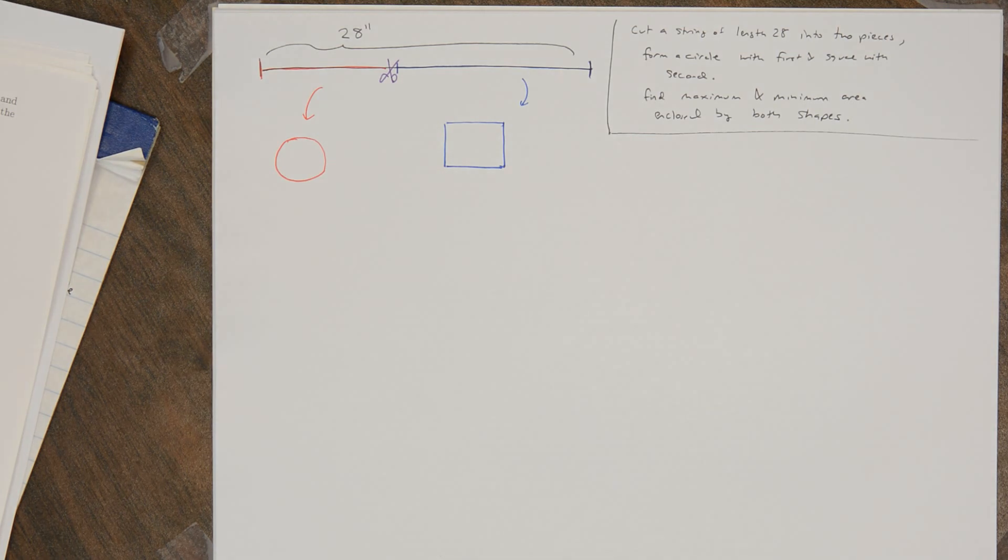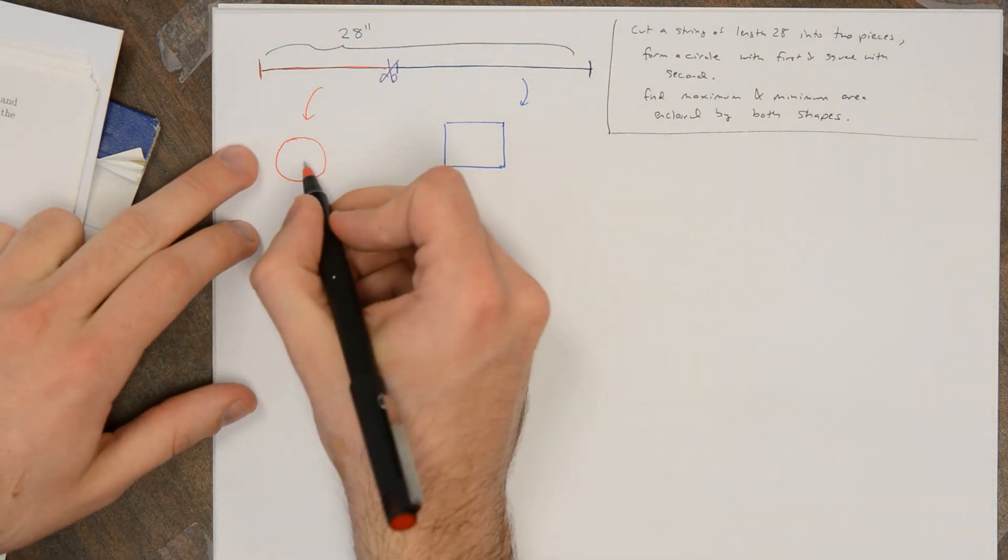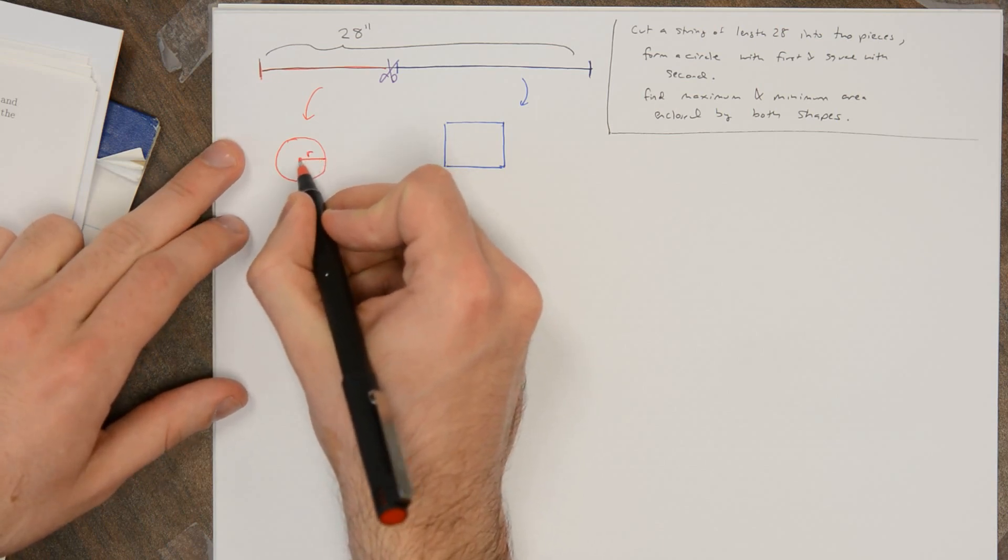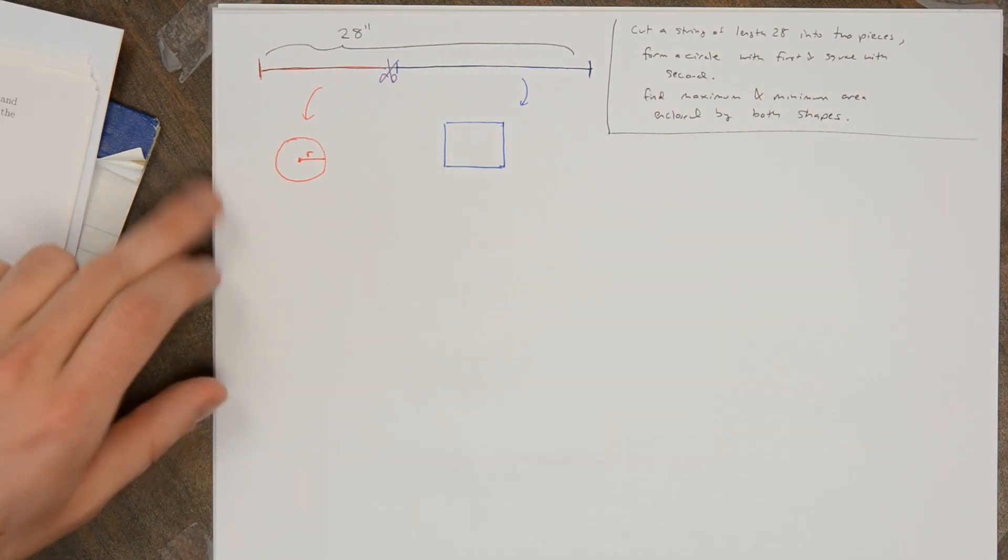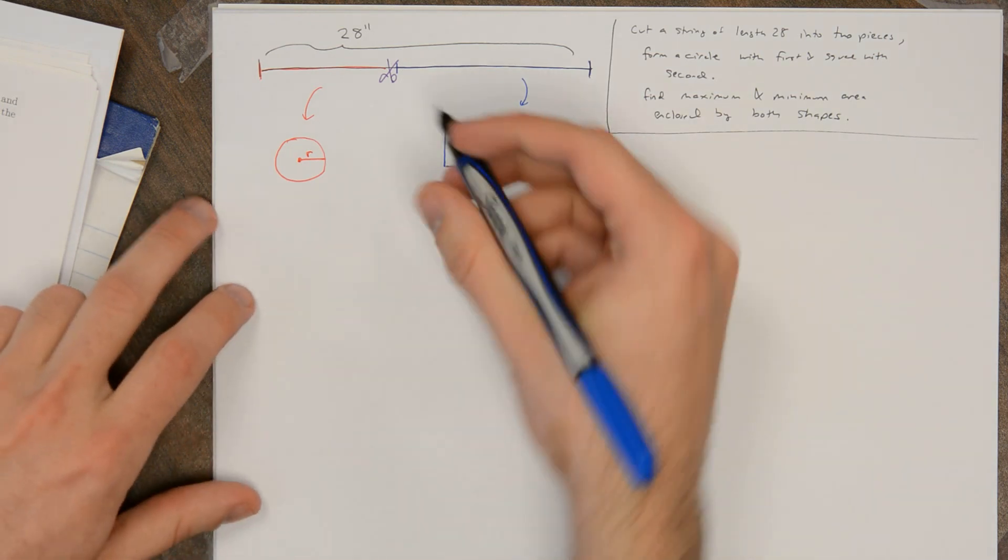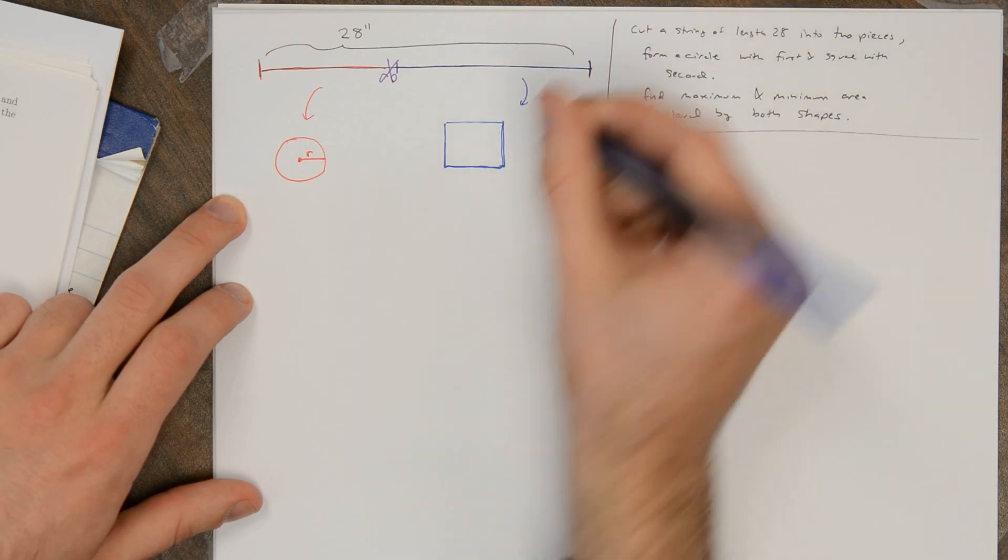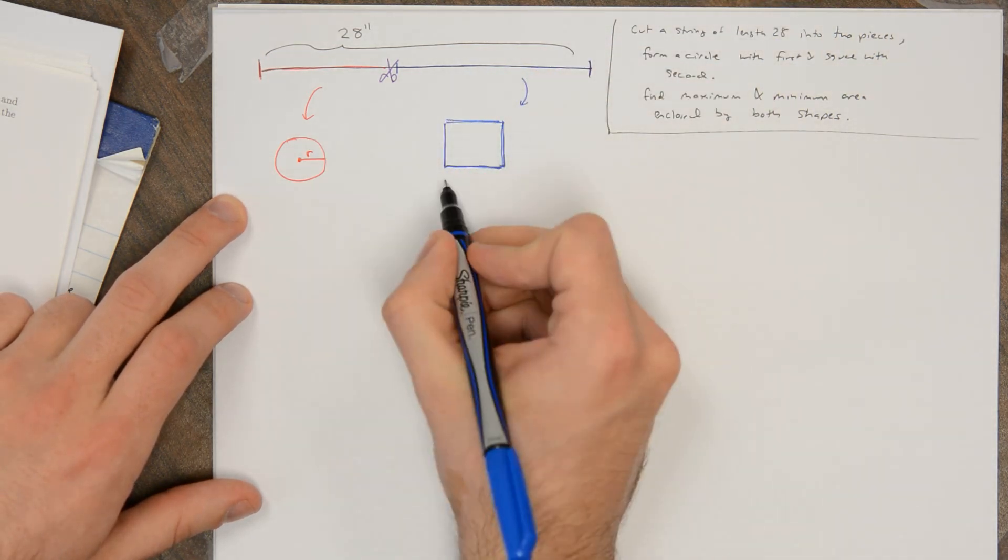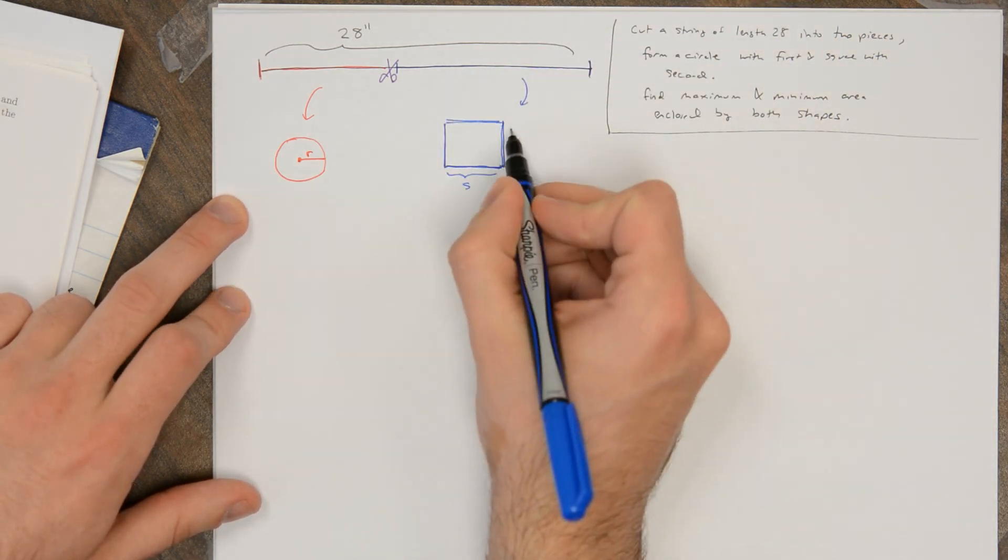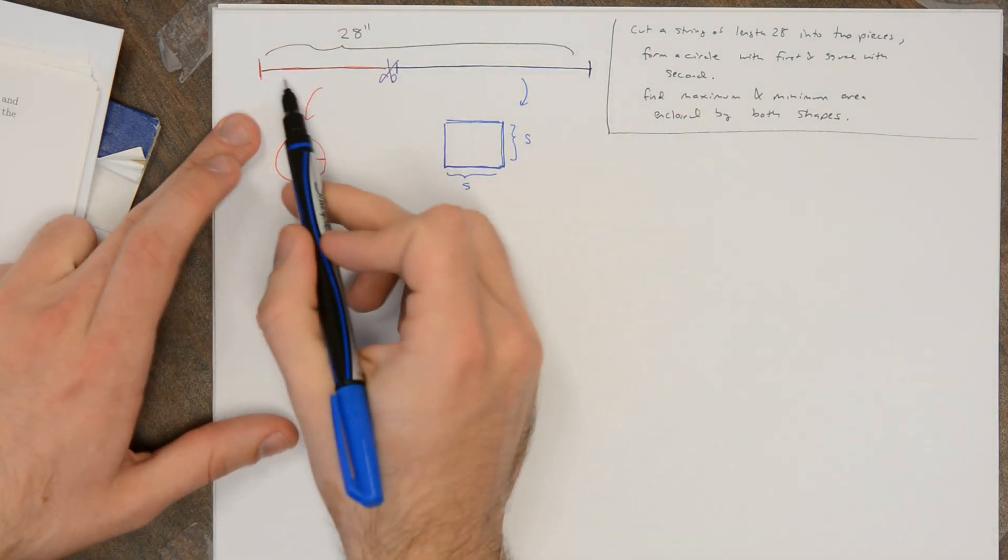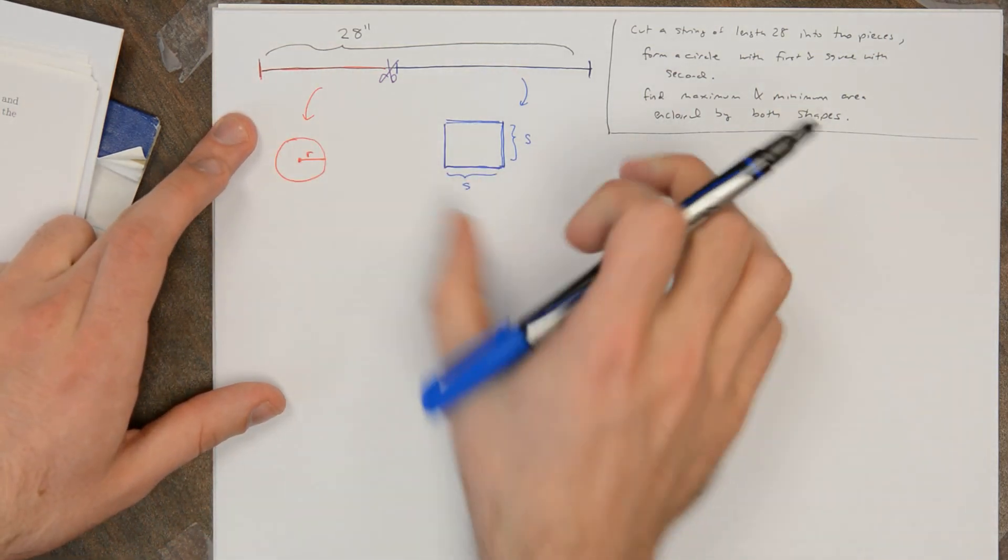So the idea is that we want to know the area of this circle, so we need to figure out its radius. And we want to know the area of the square, so we want to find its side length. And this is going to change depending on how much string we give to each part.